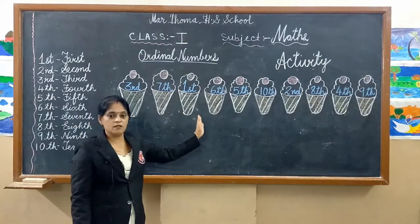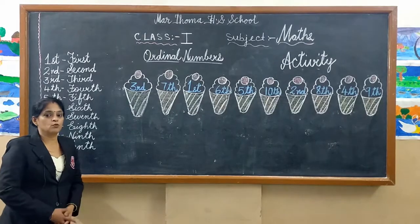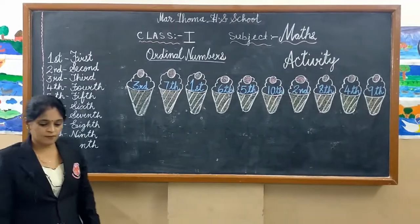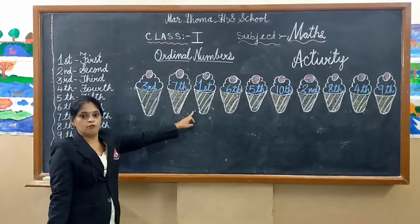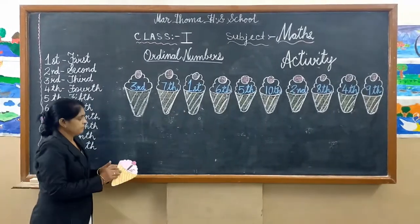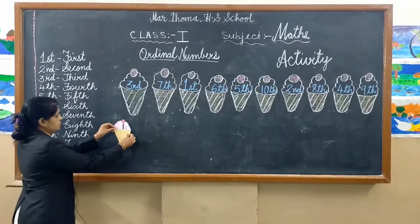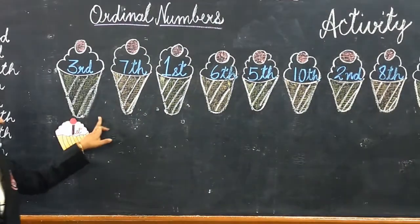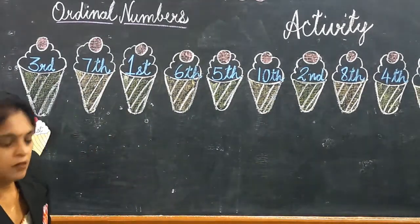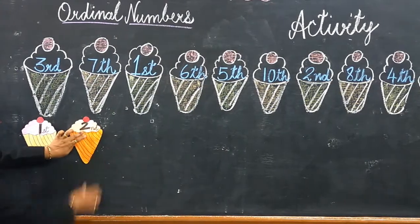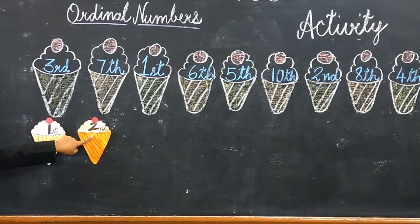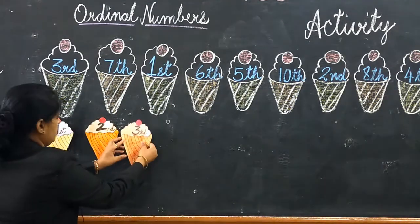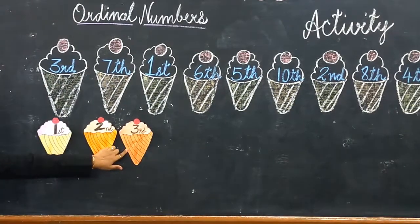I have drawn some ice creams here that are not in order. What we have to do is arrange them in order. Now let's start. We will start with number first — F-I-R-S-T, first. Now next number is second — S-E-C-O-N-D, second. Now next number is third — T-H-I-R-D, third.